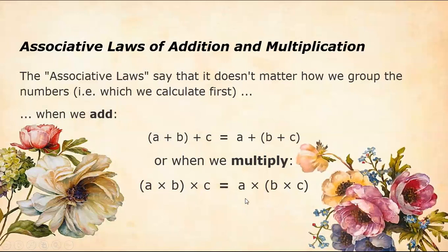For example, 1 plus 2 plus 3. We get 1 plus 2 is 3, 3 plus 3 is 6. Let's say, we get 2 plus 3 is 5 plus 1 is 6. Similarly, we can multiply with examples we can elaborate.